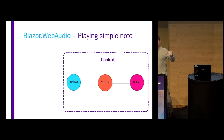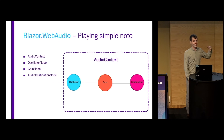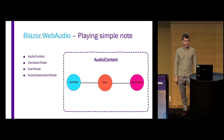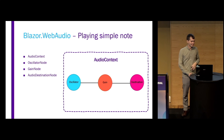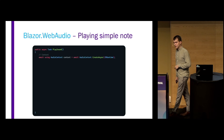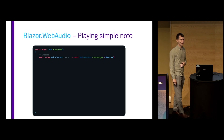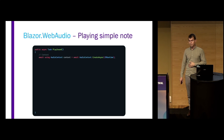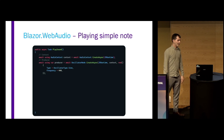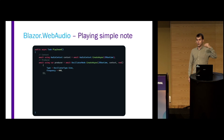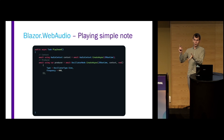We have the producer, a processor, and an output. In our case, we're going to take an oscillator generating a sine wave, put it through a gain node in order to not destroy the speakers, and then output it through the speakers. So I've made a C# method called PlaySound. First of all, I made the context — which is the audio context, because we want to use the actual speaker of my device. And then we create the producer, in this case the oscillator node. We define some settings and also connect it to the context, because the audio context is where we want to render the sound.